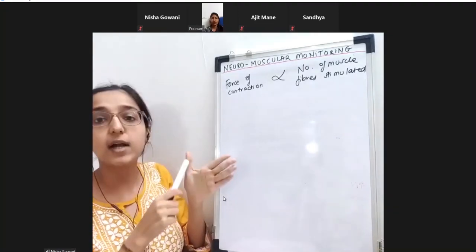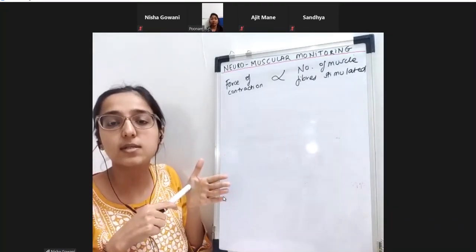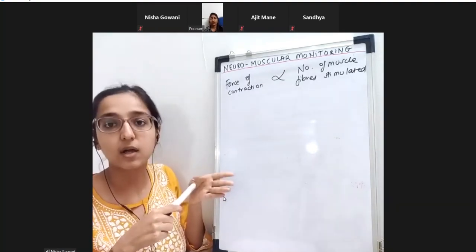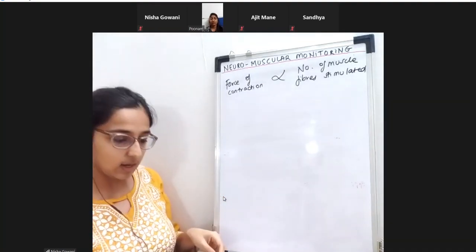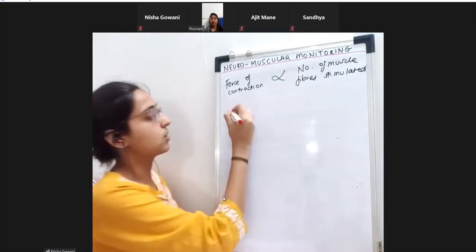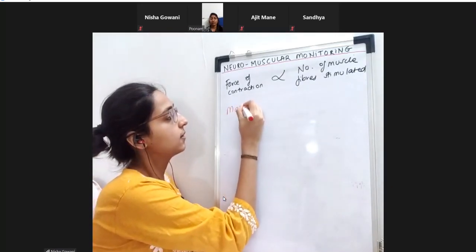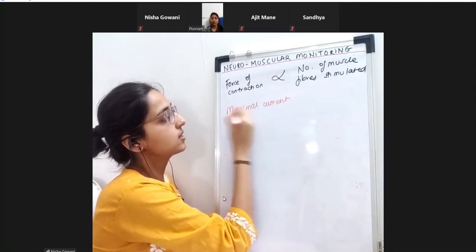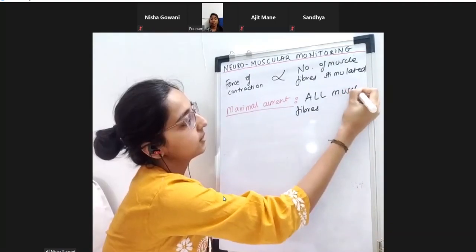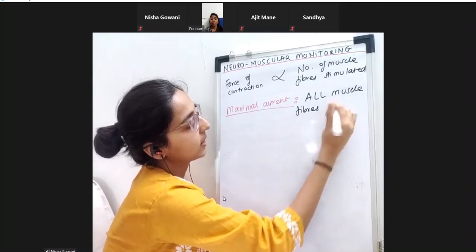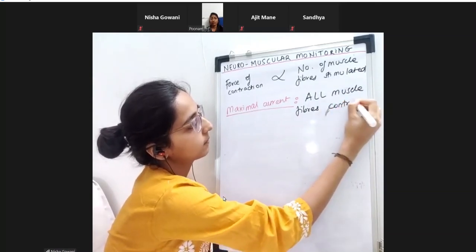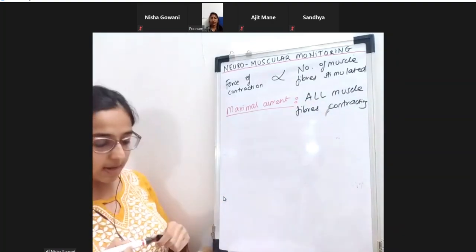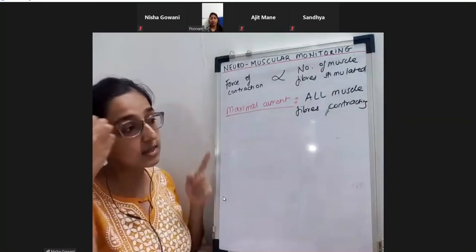When all the muscle fibers are stimulated and the whole muscle completely contracts, the current at that point is known as the maximal current - so there is something known as maximal current, at which all muscle fibers are going to contract.